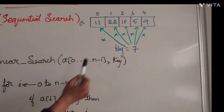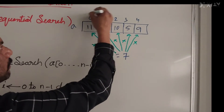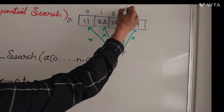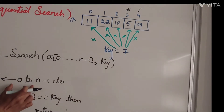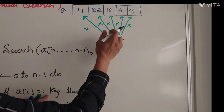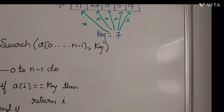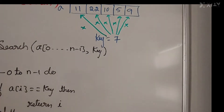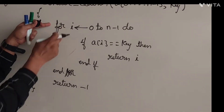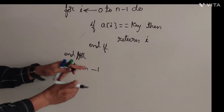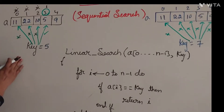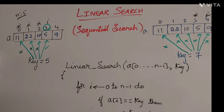For the unsuccessful case, suppose the key element is not found at position three. i goes to iteration four — four less than or equal to four, true; a[4] equals key? False. i increments to five — five less than or equal to four? False — the for loop exits. We return minus one, indicating not found. I have explained both the found case and the not-found case.